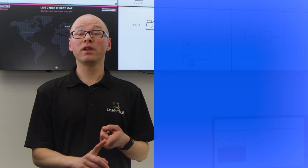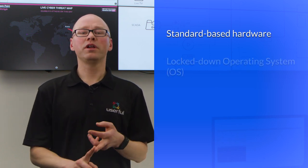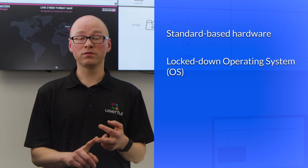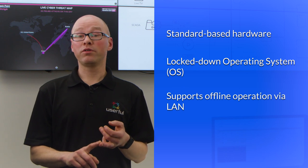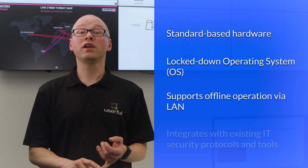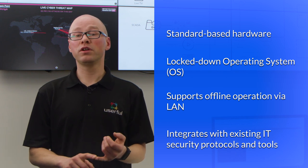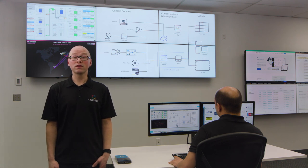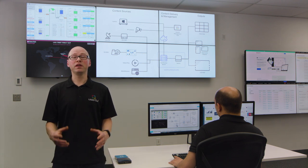We use standard-based hardware, reducing unknown security risks. The operating system is bit-for-bit Red Hat Enterprise and has been fully locked down. The solution can be operated offline within the local area network, and customers retain the ability to leverage their existing internal network, server security, and monitoring tools. With Userful, you can integrate your existing security protocols into your command and control solution, making it easy to implement and maintain.